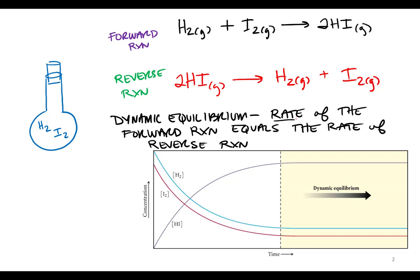But it's not the concentrations that are changing. The reactions are continuing to go all the time. But since the rates of the forward and the reverse are equal, they don't change. You're making HI as much as you're using up HI. You're using up hydrogen and iodine as much as you're making hydrogen and iodine.